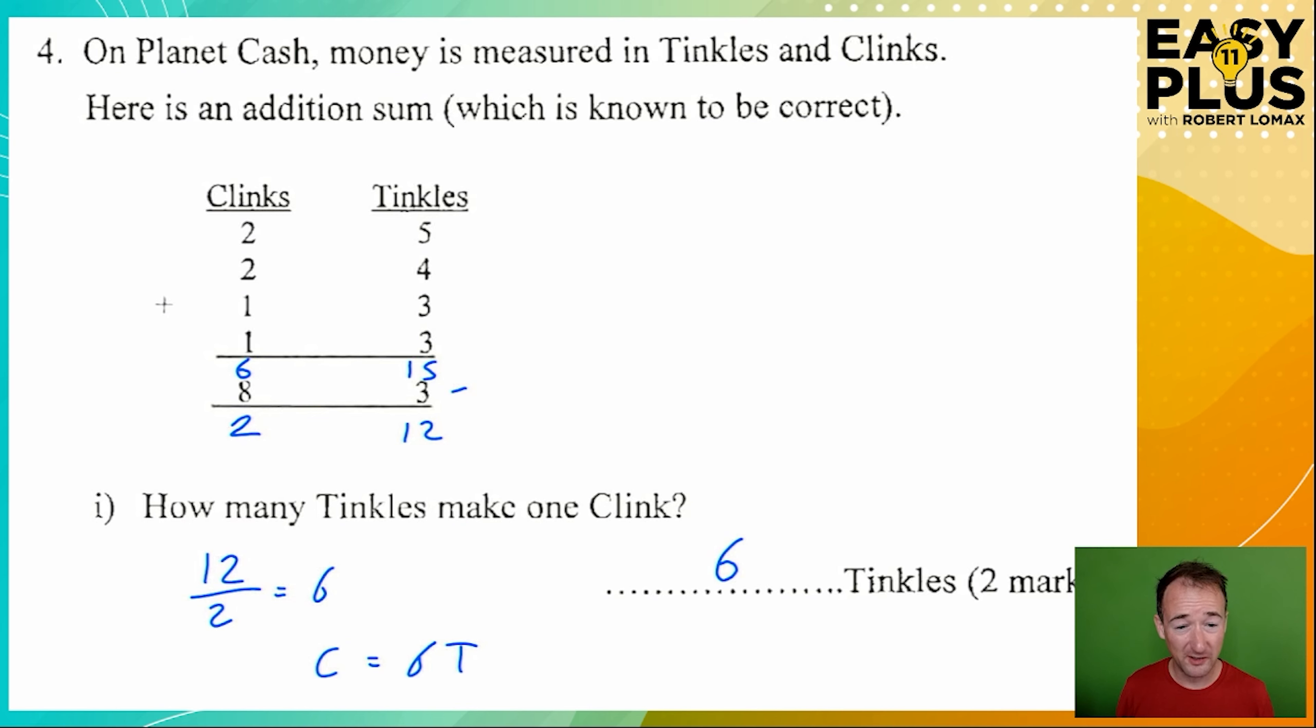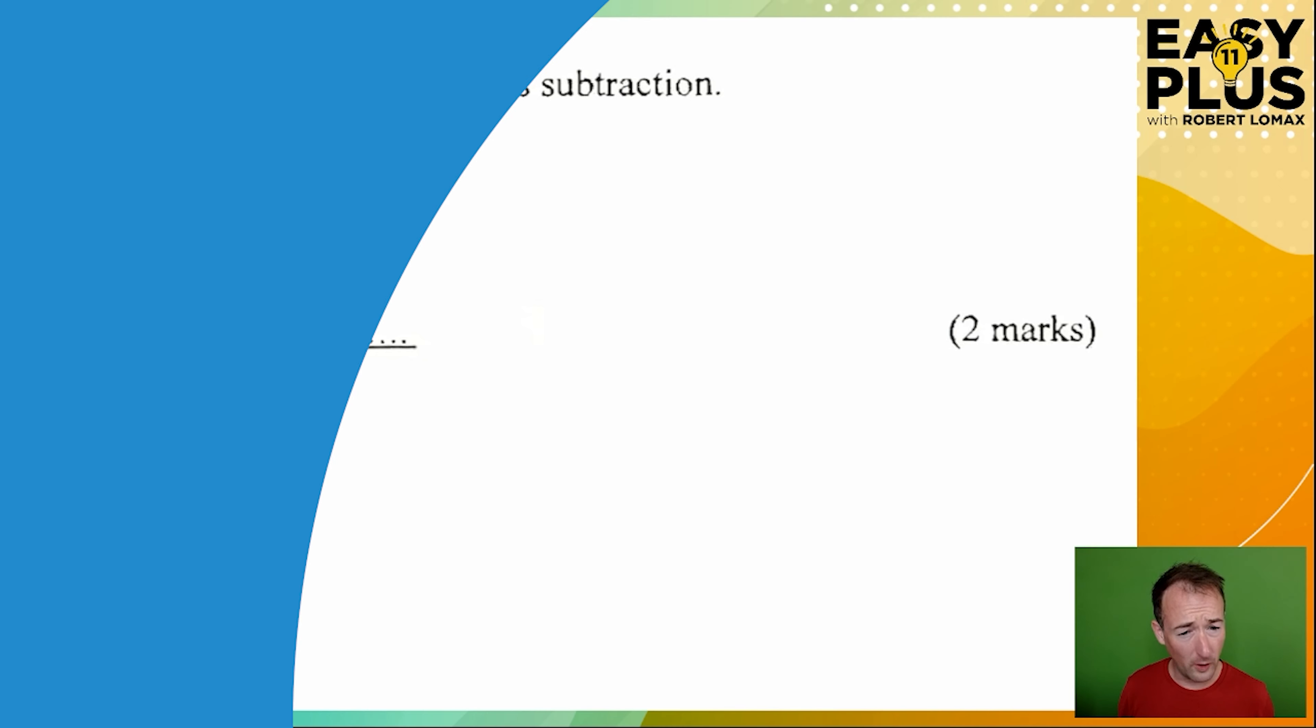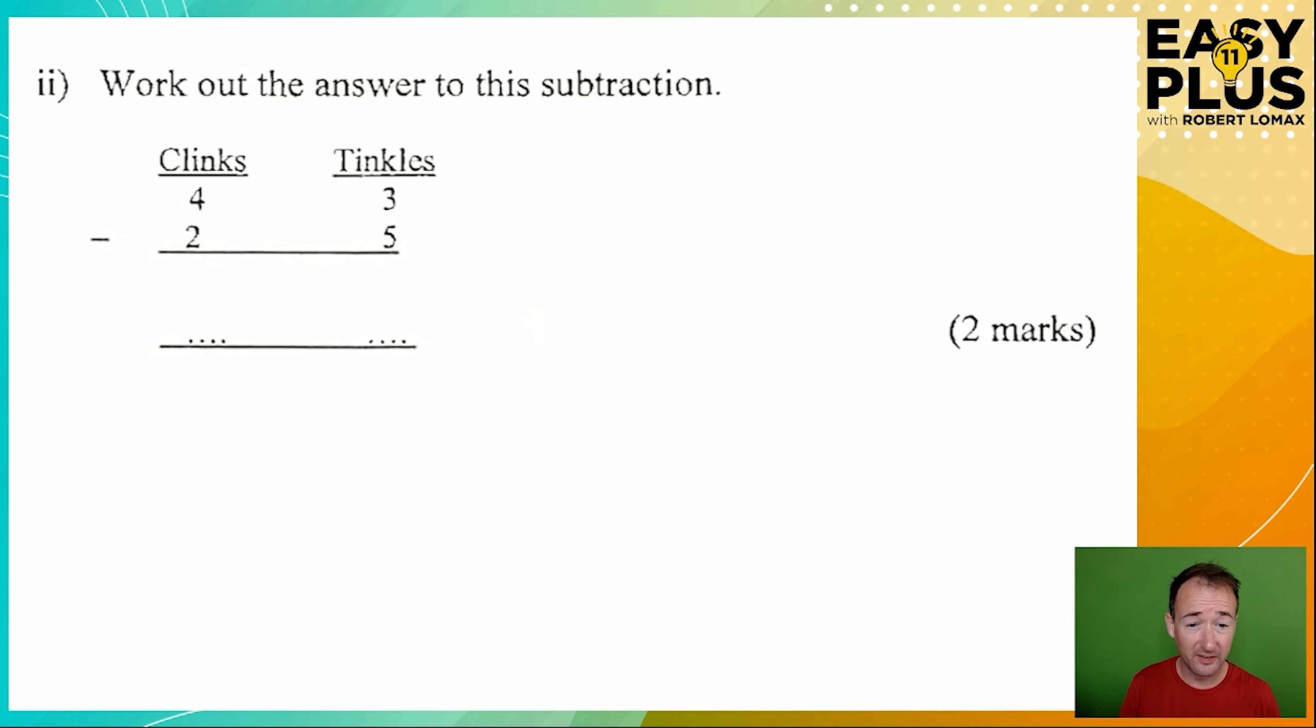If you still haven't got it, watch it again, try the question yourself with the worksheet, and you'll get the hang of it. For now, let's move on. We know that 1 clink is equivalent to 6 tinkles. It's worth noting that down so that we have it there when we need it.